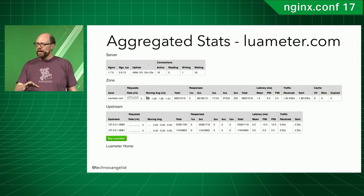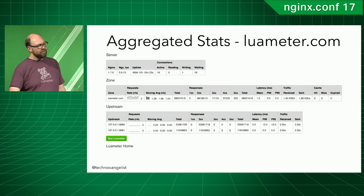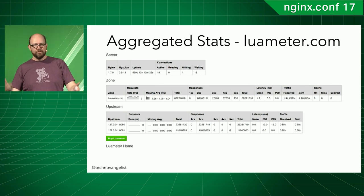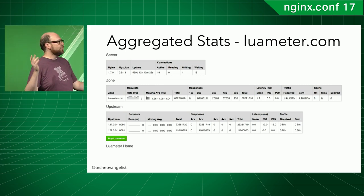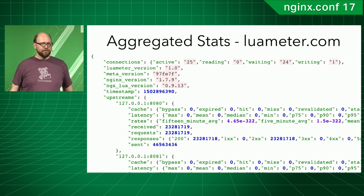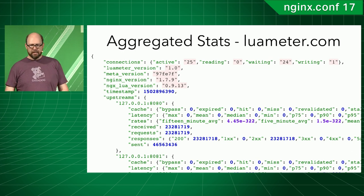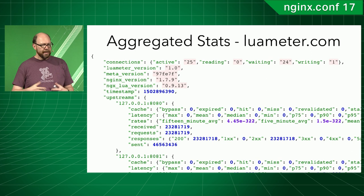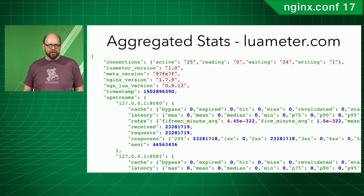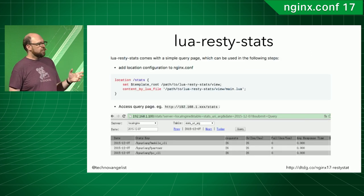That $49 gives you a compiled Lua module. If you want access to the source code, it's $499 — that's the company license and you can load it on as many boxes as you want. That's the human-readable version, and there's also a computer-readable JSON version that something like the Datadog agent can read and pull metrics from. If you want to do it yourself and understand how it's built, you could use something like LuaRestyStats — there's a GitHub repo at dtdg.co/nginx17-restystat.